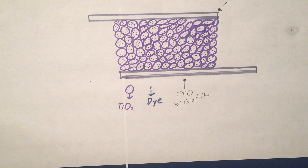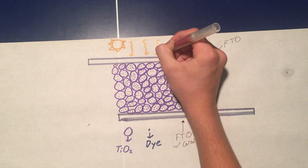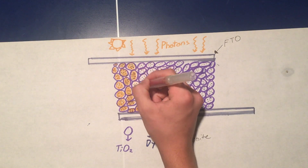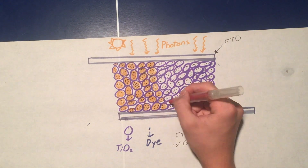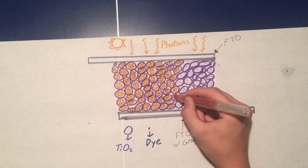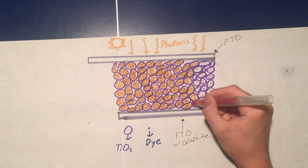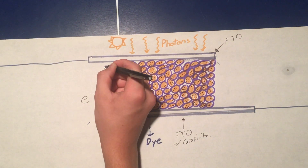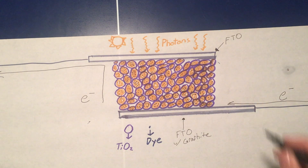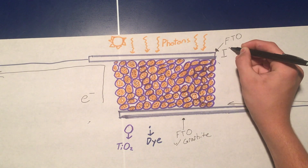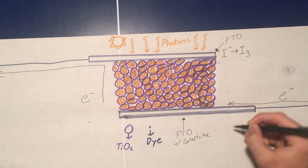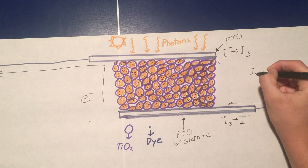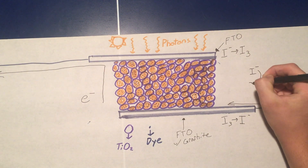The FTO plates are held together by binder clips. When light hits the cell, it is absorbed by the dye used in the DSSC. Photons excite the titanium dioxide particles and cause them to release electrons, represented by the orange shading. These electrons exit the cell through the anode, travel through a load, and return to the cell through the cathode. At the anode, iodide electrolyte in the cell is oxidized to form triiodide, and is then reduced at the cathode to form iodide again. This redox coupler replenishes the electrons and allows for a continuation of the circuit.